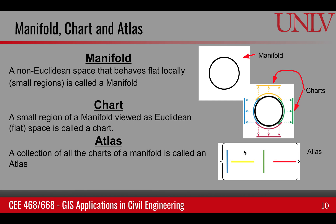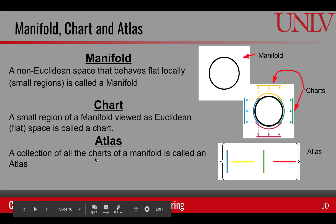With that knowledge, here is some terminology that comes up in map making. A manifold is a non-Euclidean space that behaves Euclidean locally. A chart is a small region of the manifold viewed as a flat Euclidean space. For example, if a circle is a manifold, any small portion of it can be treated as a straight line — that small portion is called a chart. You can take a circle and make many charts along its length. An atlas is a collection of charts that fully cover a manifold. The atlas of the world is basically a collection of charts covering our globe.